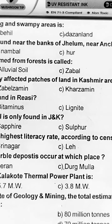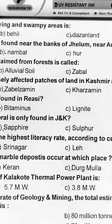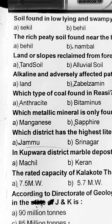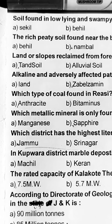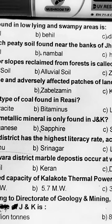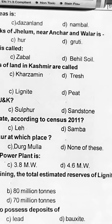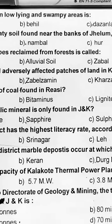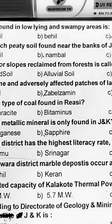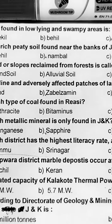Iska option hai B part. Next question: the rich peat soil found near the banks of Jhelum, near Anchar and Wular is? Iska option hai B part.